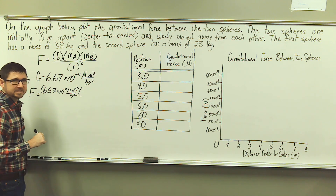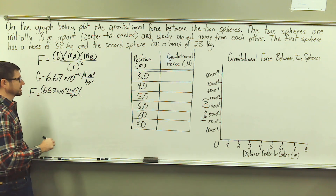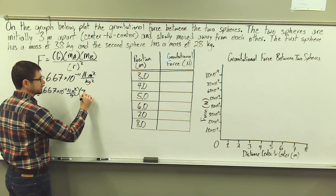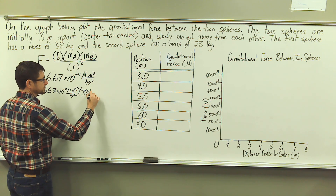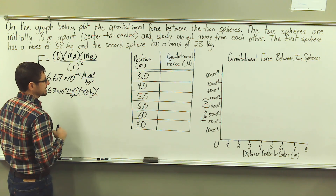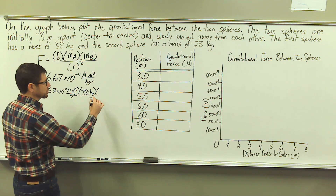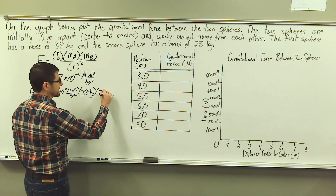We're going to multiply this by mass A, which is 38 kilograms, and then mass B, which is 28 kilograms.